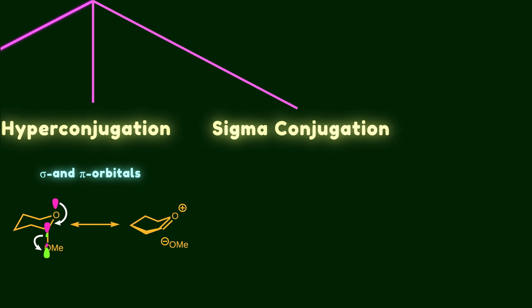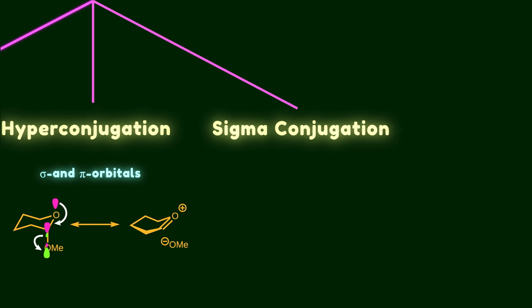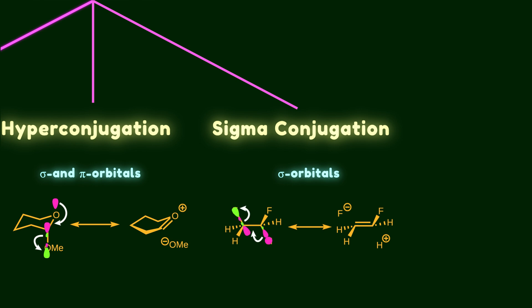Sigma conjugation is another type of delocalization in which sigma orbitals interact with each other. 1,2-difluoroethane is an example of sigma conjugation, where electrons in a C-H bond interact with the anti-bonding orbital of a C-F bond. You may be less familiar with this type of interaction because it doesn't involve pi bonds or non-bonding electrons.